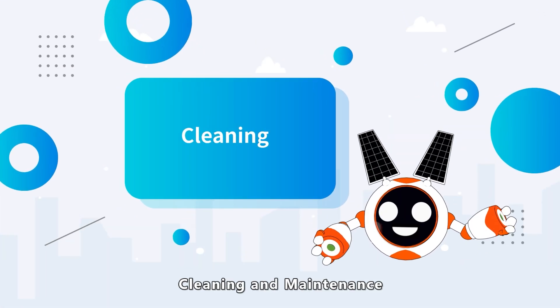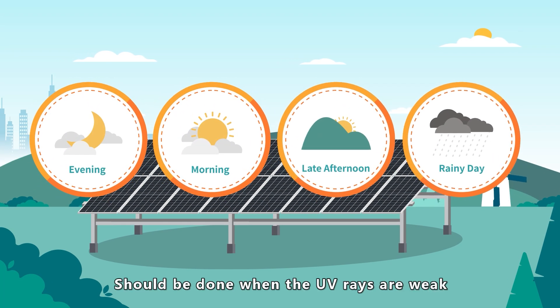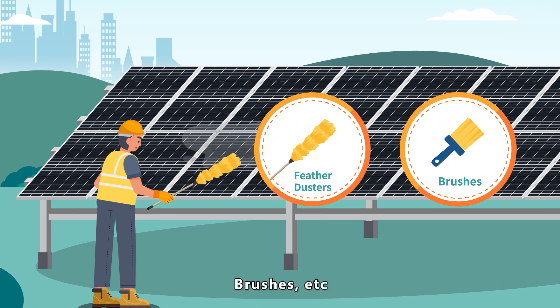Cleaning and maintenance. PV module cleaning work should be done when the UV rays are weak. To clean dust, use feather dusters, brushes, etc.